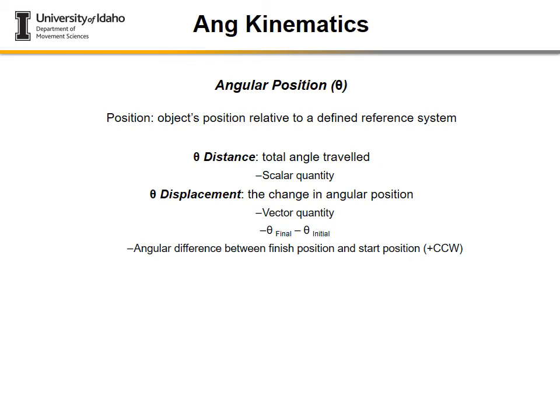Just like linear kinematics has distance and displacement, angular kinematics has both. Angular distance is a scalar quantity — magnitude only, no directionality. Angular displacement is a vector quantity with directionality. The counterclockwise positive convention is critical here: if motion is counterclockwise, displacement is positive unless told otherwise.